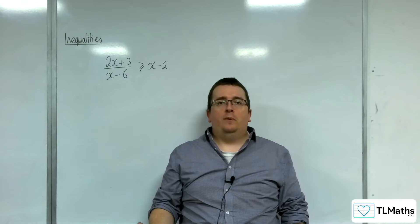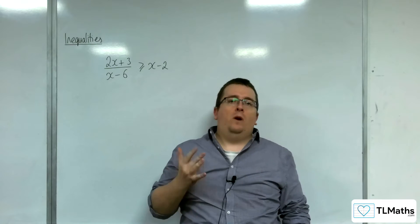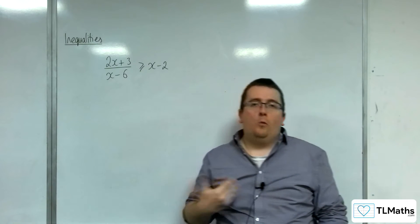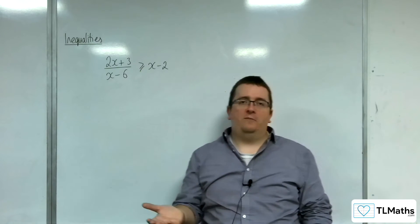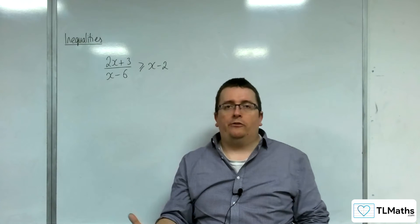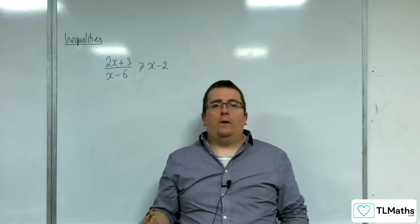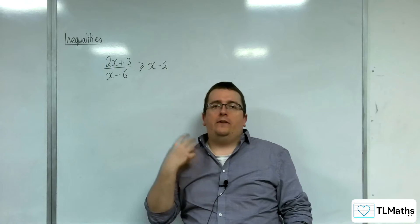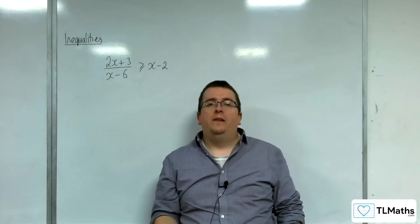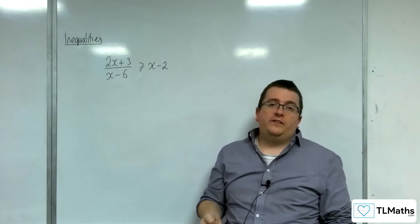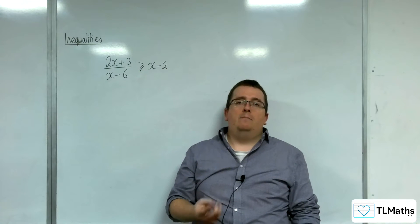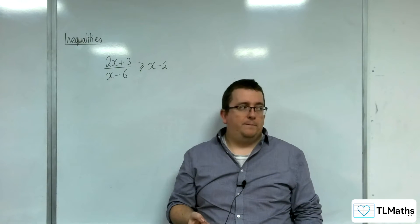By this stage, I've probably convinced you one way or the other of whether to use Method 1 or Method 2. Method 1 being a straight-out sketch, find out where the intersection is, and then evaluate based on the graph. Or Method 2 is just a wholly algebraic route multiplying by the denominator squared.